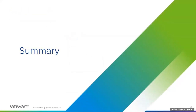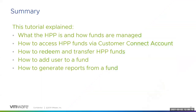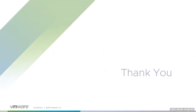Let's take another look at what was covered in this tutorial. This tutorial provided a high-level review of what the Hybrid Purchasing Program is and how the funds are managed. We walked through how to access both HPP funds, redeem HPP credits for licenses and services, transfer credits between the two HPP funds, add a user to a fund, and generate reports. Thanks for watching.